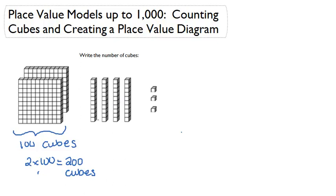Let's look at the cubes in the middle. Each of these has 10 cubes. However, we have four stacks. So we would do 4 times 10. That would give us 40 cubes.